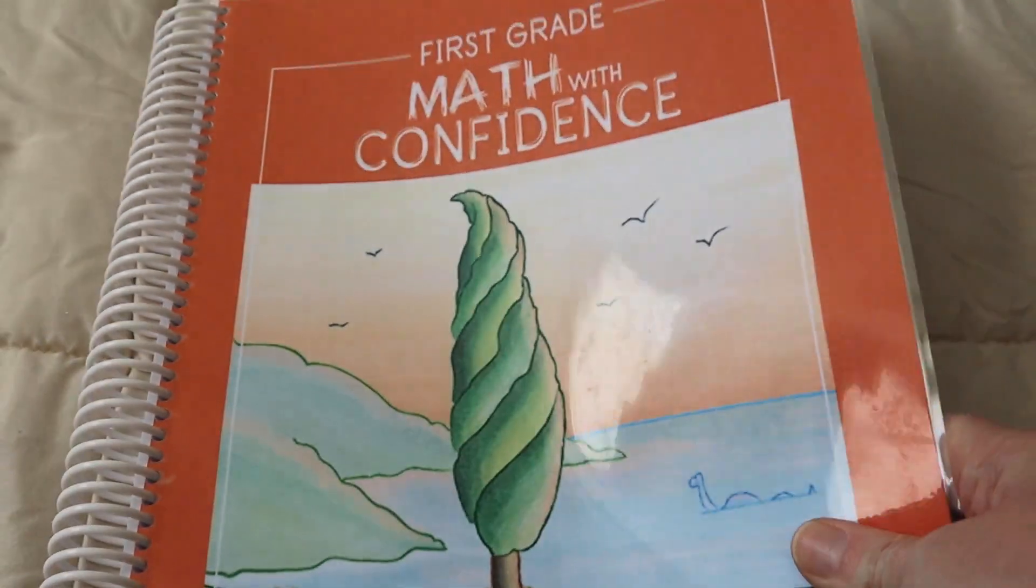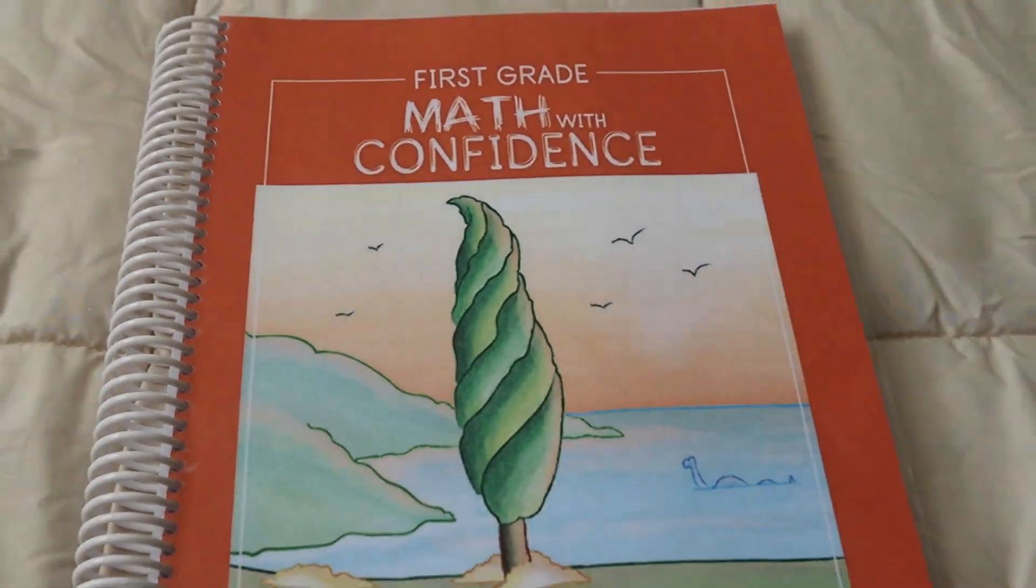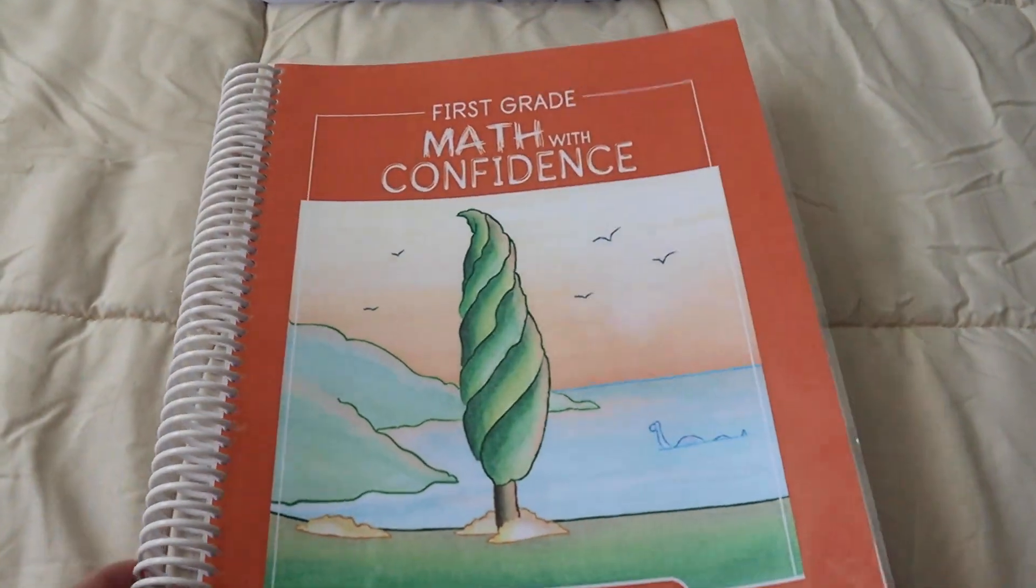And here they're just writing the number before and the number after. So this is lesson 7.1. We've only done the first six weeks so far, but I'll do a little bit of a flip through now, just so you can see what the book looks like. This is the workbook.